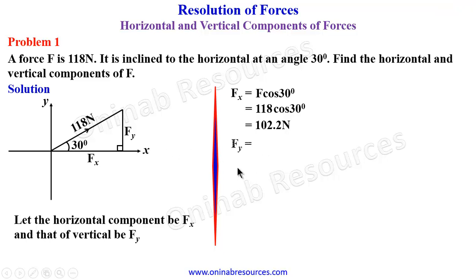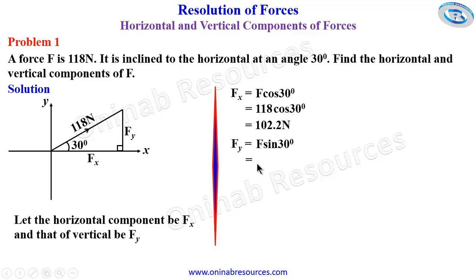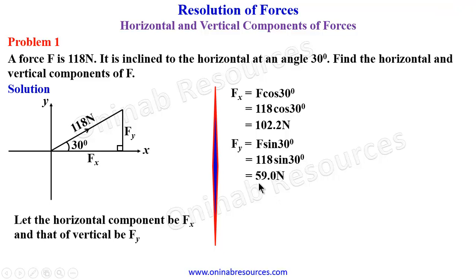For the vertical component, Fy equals F sin 30 degrees, because this involves the opposite and hypotenuse. Substituting, we have 118 times sin 30 degrees. Pressing our calculator, we get 59.0 newtons. And that is all for the solution of problem 1.